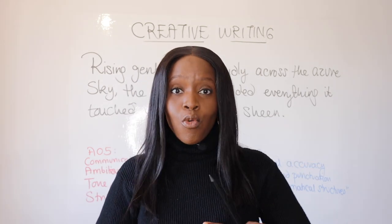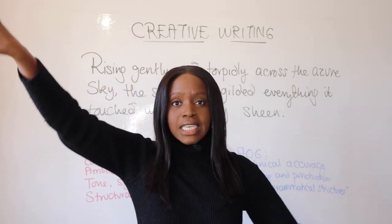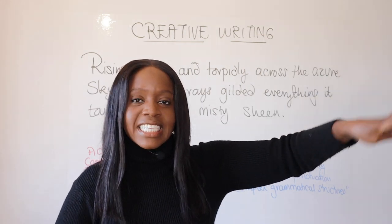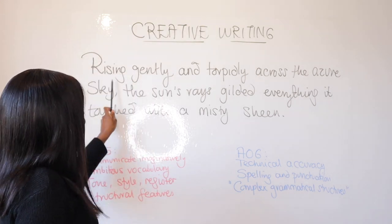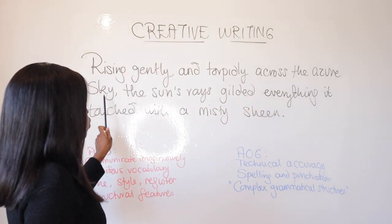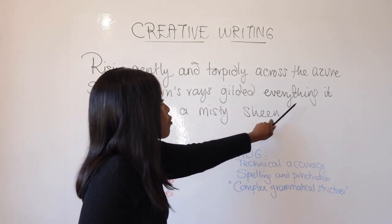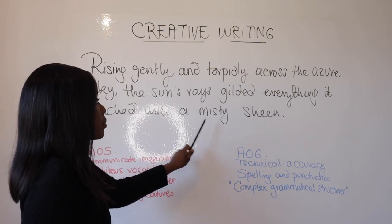I want to present to you the sentence you should use for any creative writing story to start yourself off, and I'll explain why it's such a powerful story starter and show you how it hits both assessment objectives — your AO5 and your AO6. So this is the phrase to use in any creative writing story, whatever setting you choose: "Rising gently and torpidly across the azure sky, the sun's rays gilded everything it touched with a misty sheen."